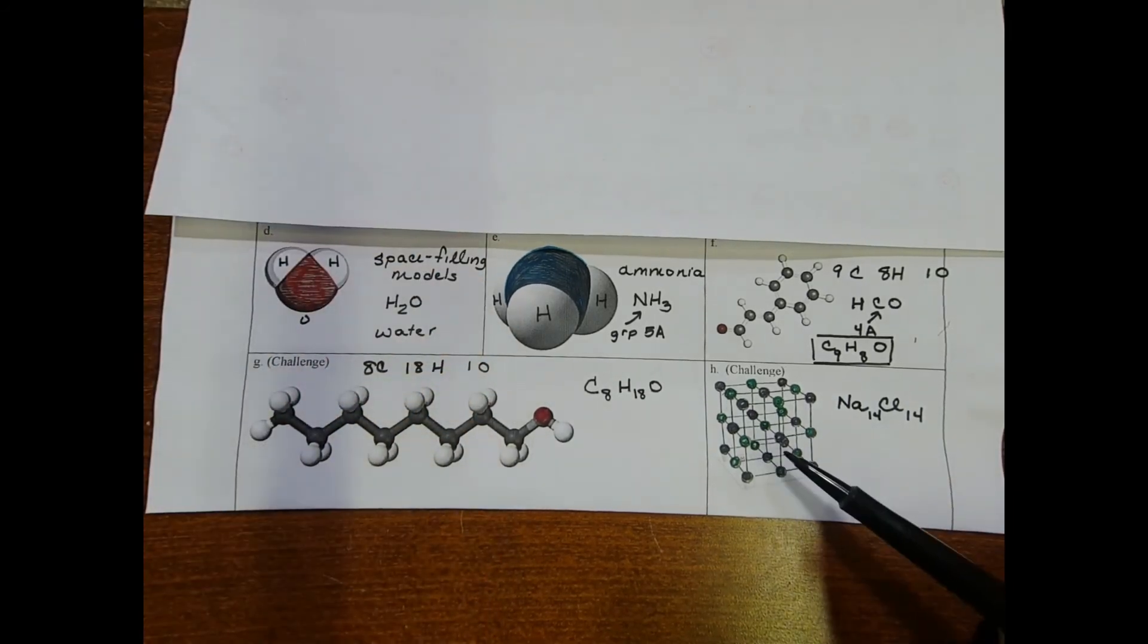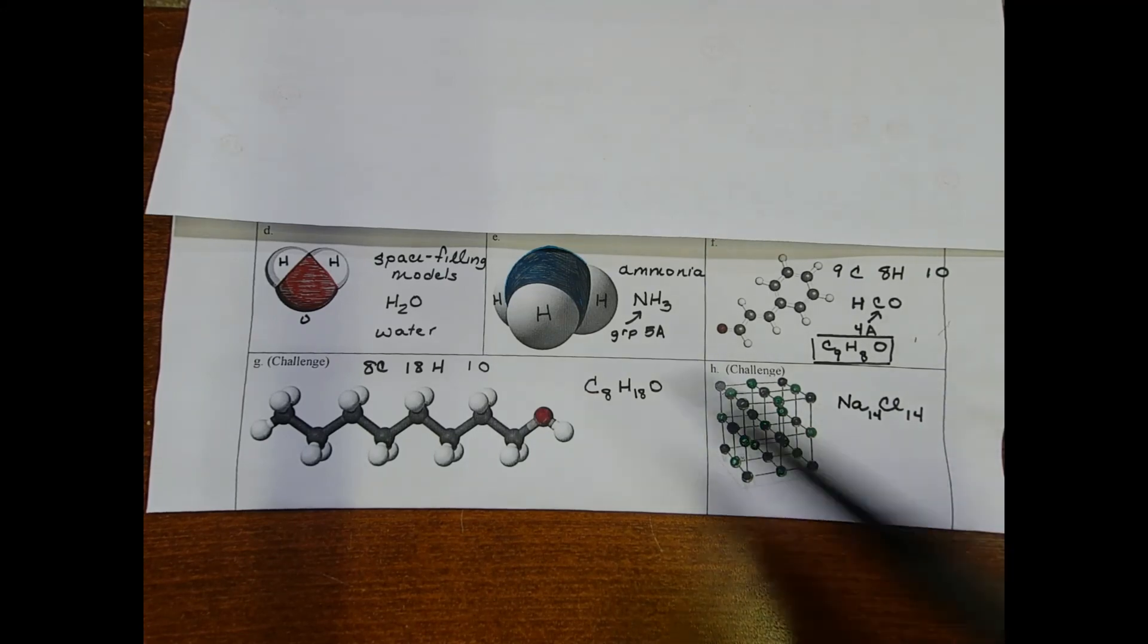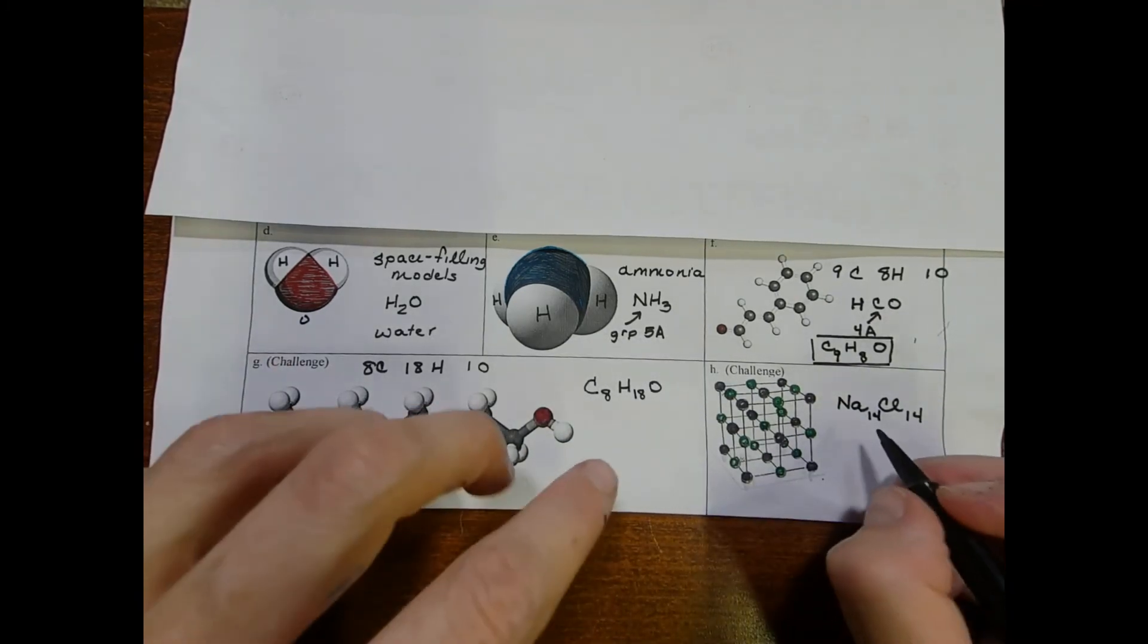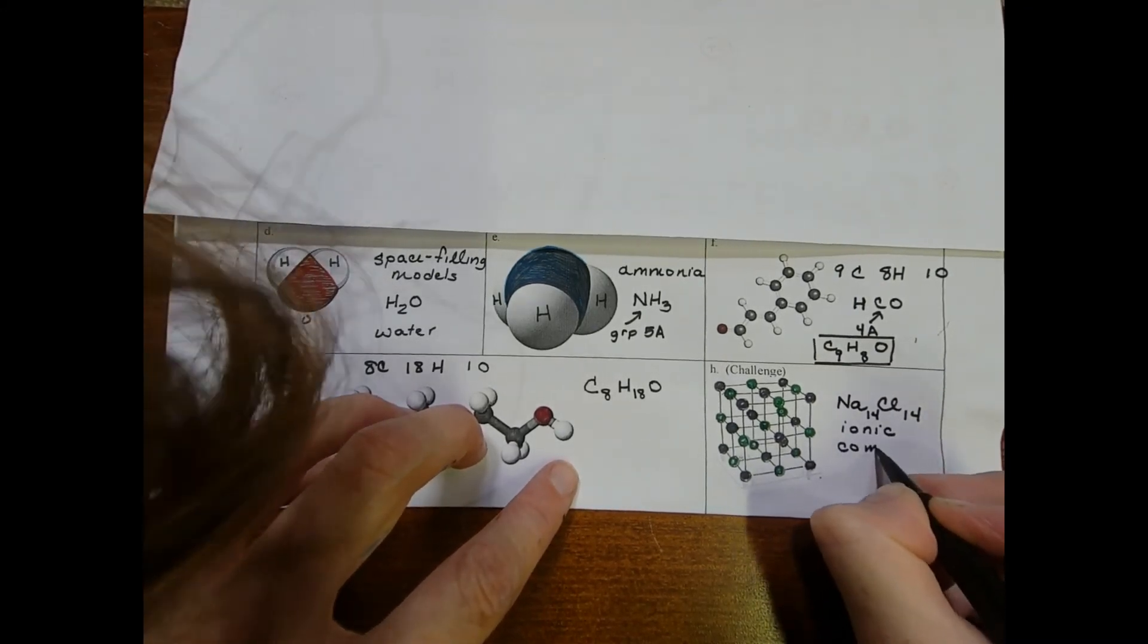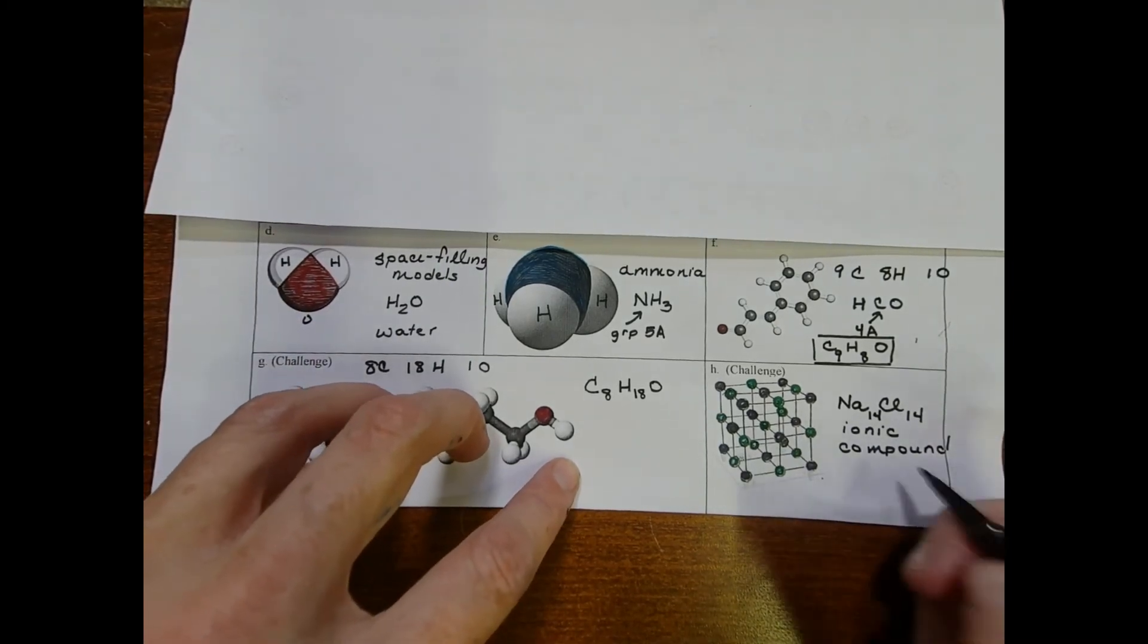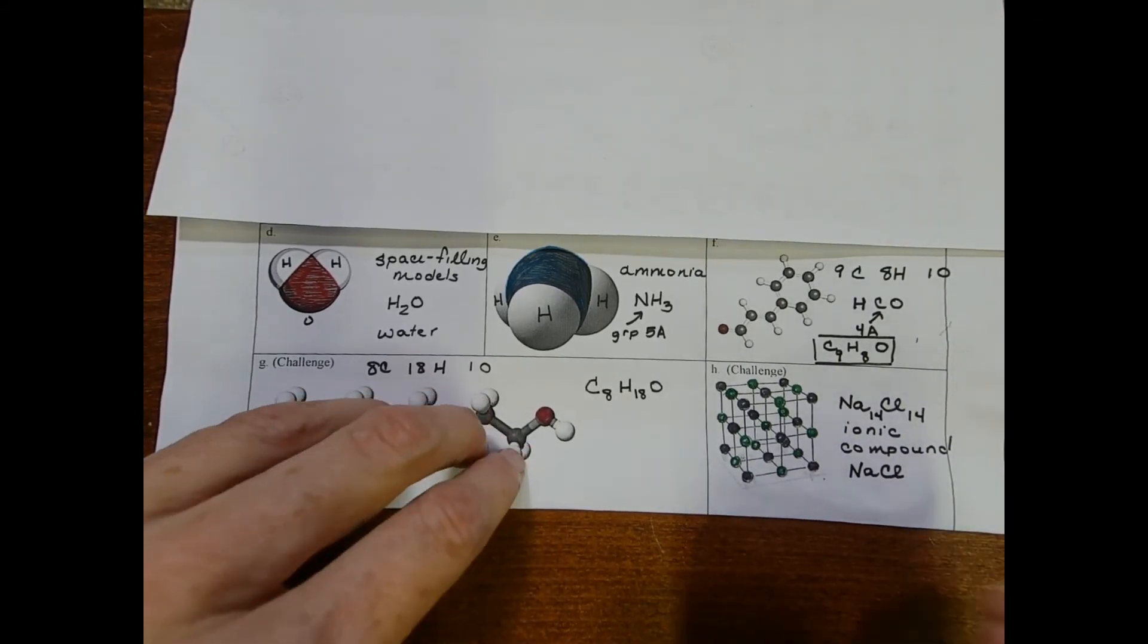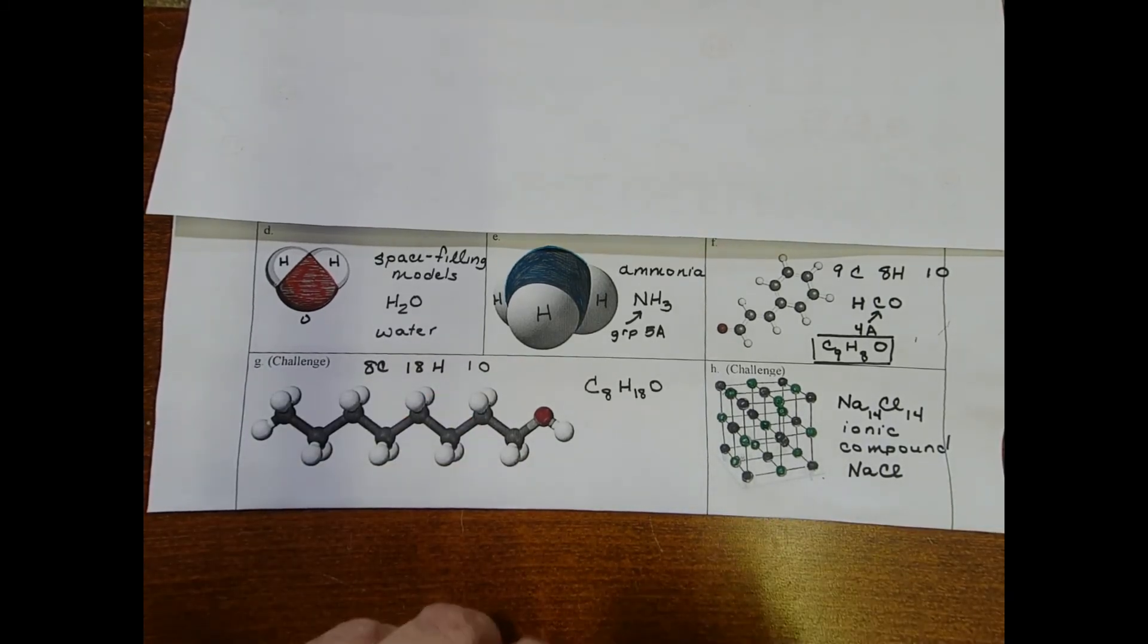Now this compound, the way it's drawn, looks a lot different than the other ones. And that's because these are covalent compounds, covalent molecules. This is an ionic compound. And we're always going to write our ionic compounds in their reduced forms. So we're not going to write Na14Cl14. We're simply going to write NaCl. Because in any salt molecule, the sodium is in a one-to-one ratio with the chlorines.